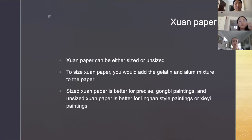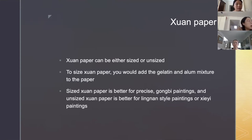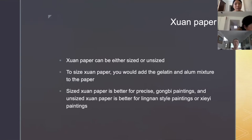This is what I presented last time about xuan paper. Xuan paper can either be sized or unsized. To size xuan paper, you add a gelatin and alum mixture to the paper. Sized xuan paper is better for precise gongbi paintings, and unsized xuan paper is better for lingnan style paintings or xieyi paintings.